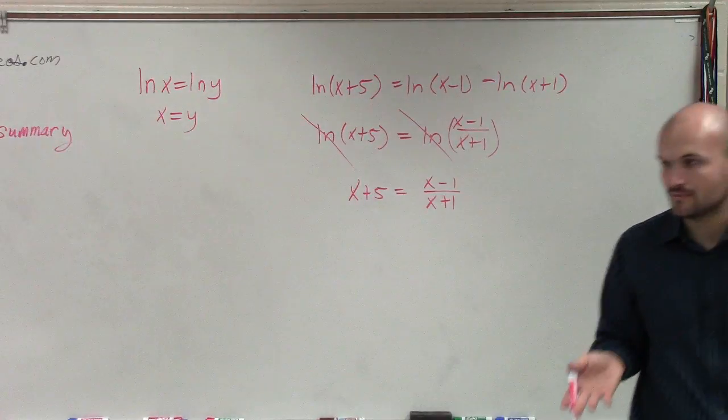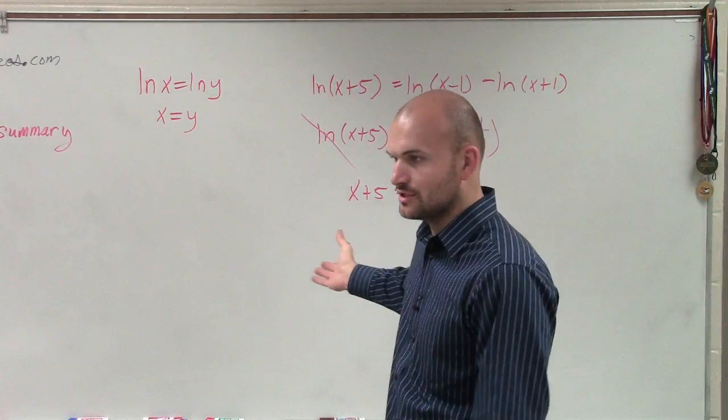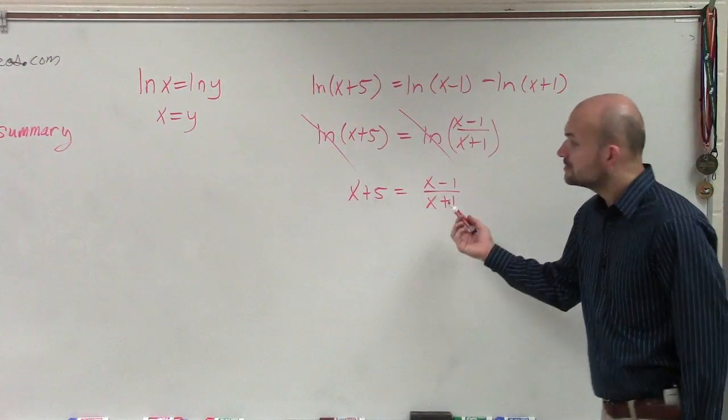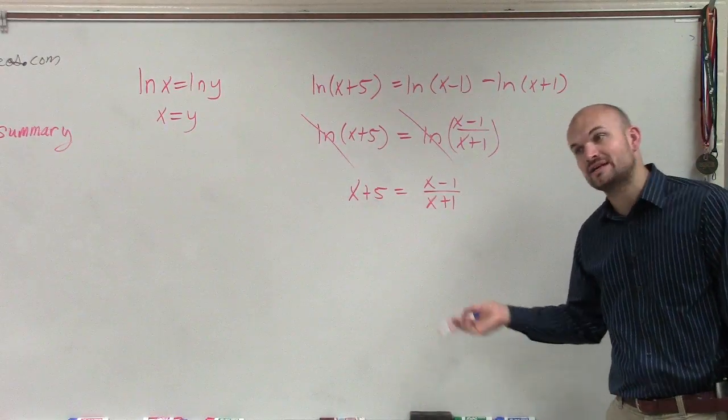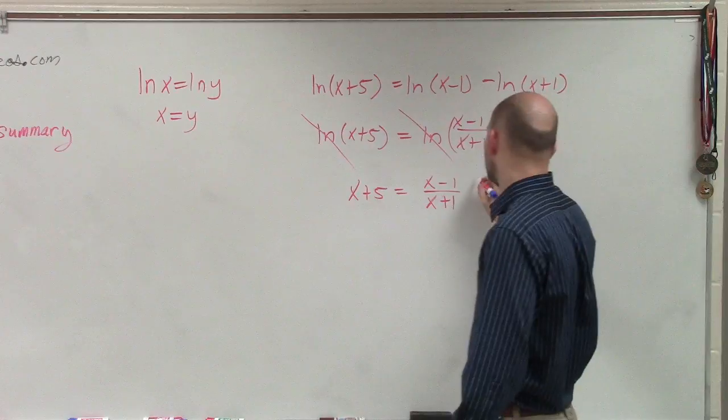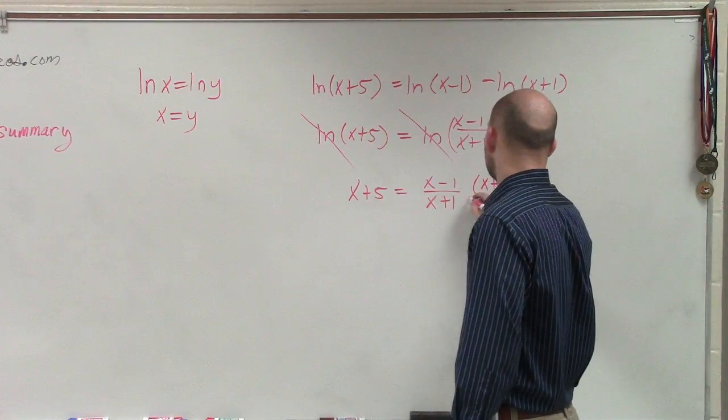All right, so now we need to solve with a rational expression. So to get rid of the x plus 1, we need to multiply by x plus 1 on both sides.